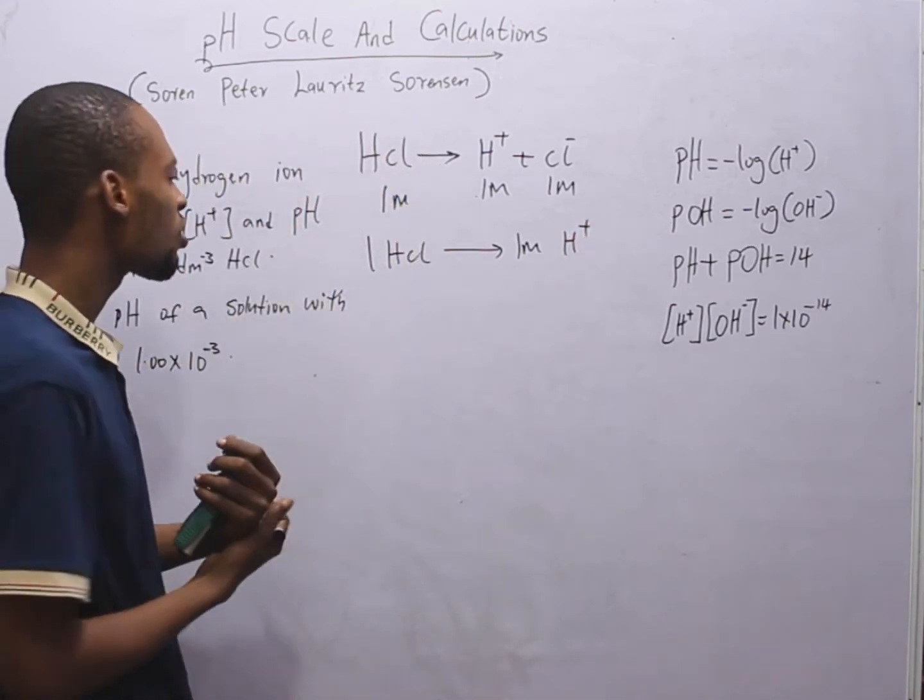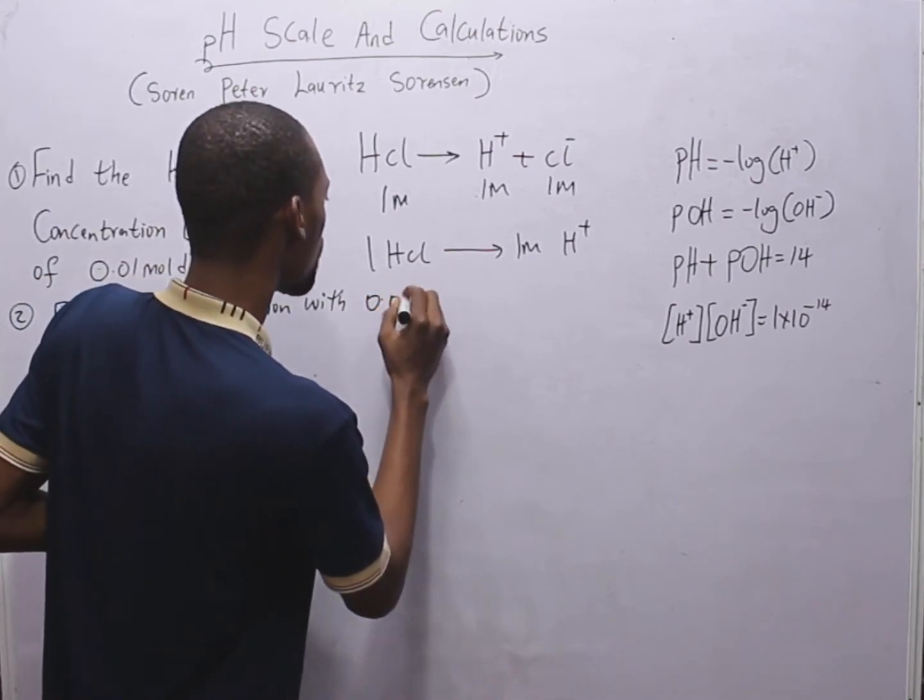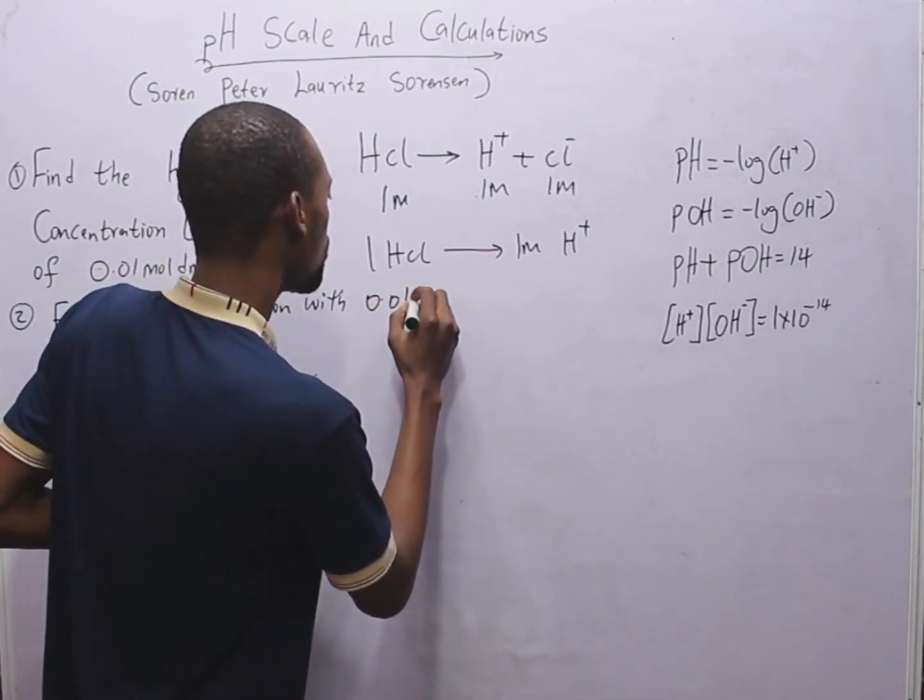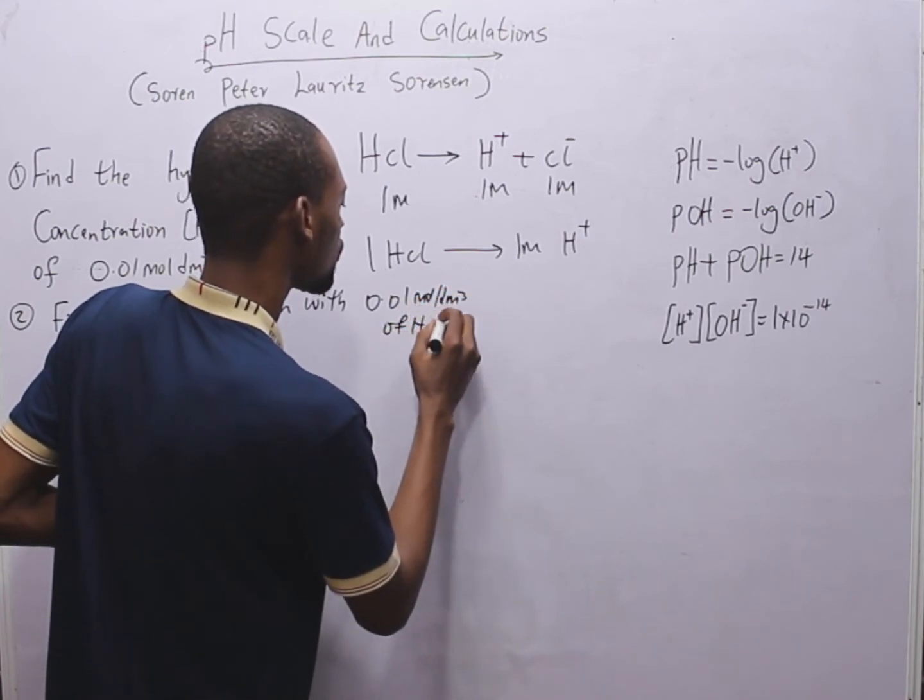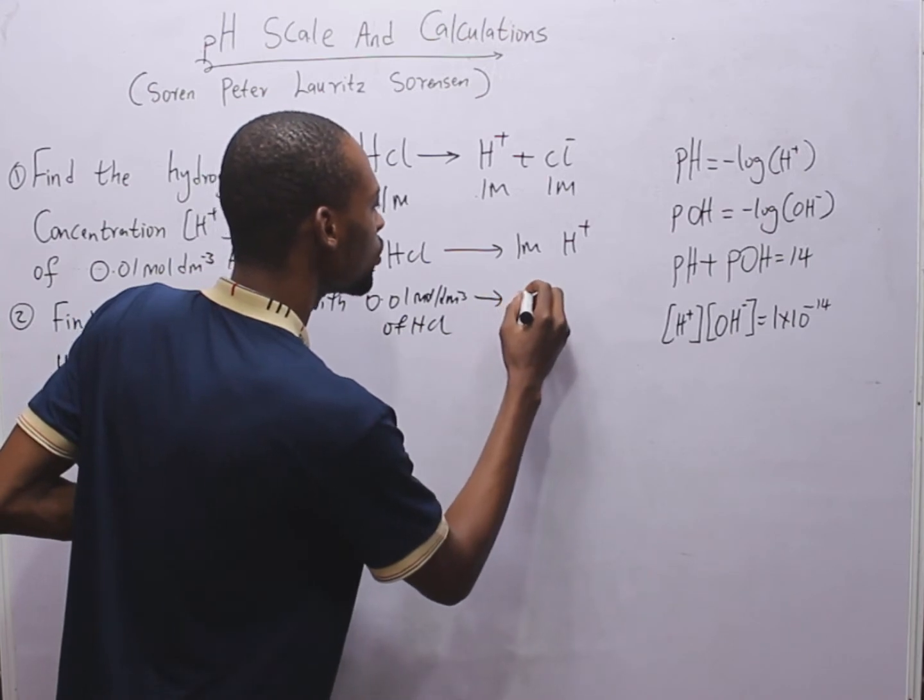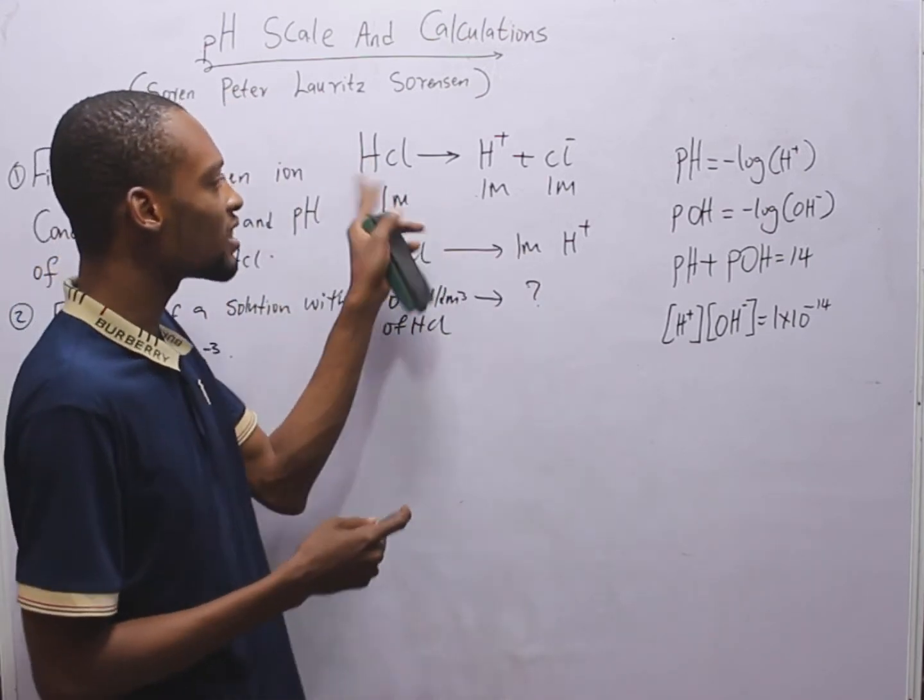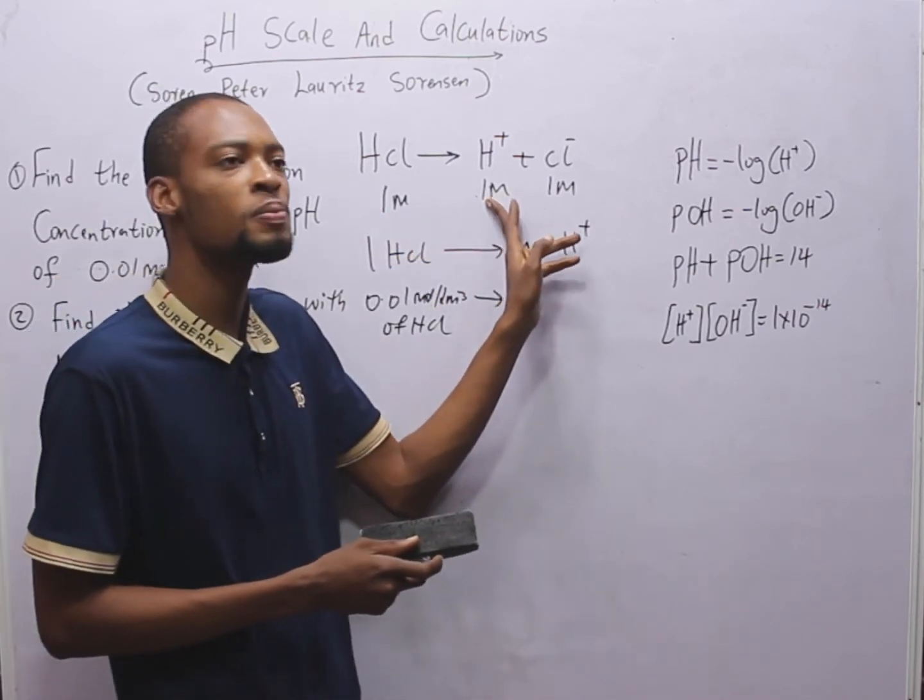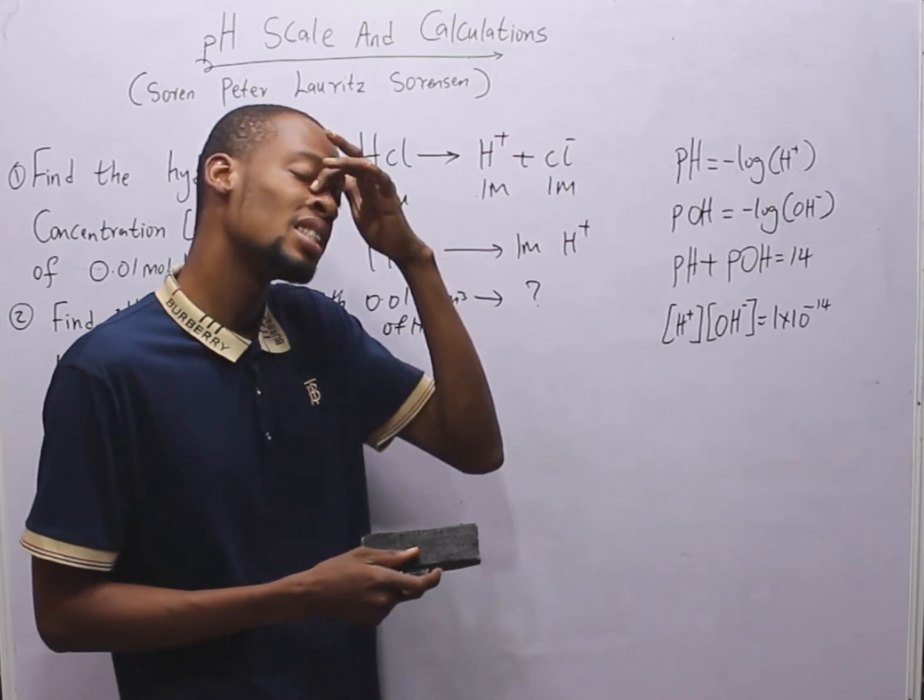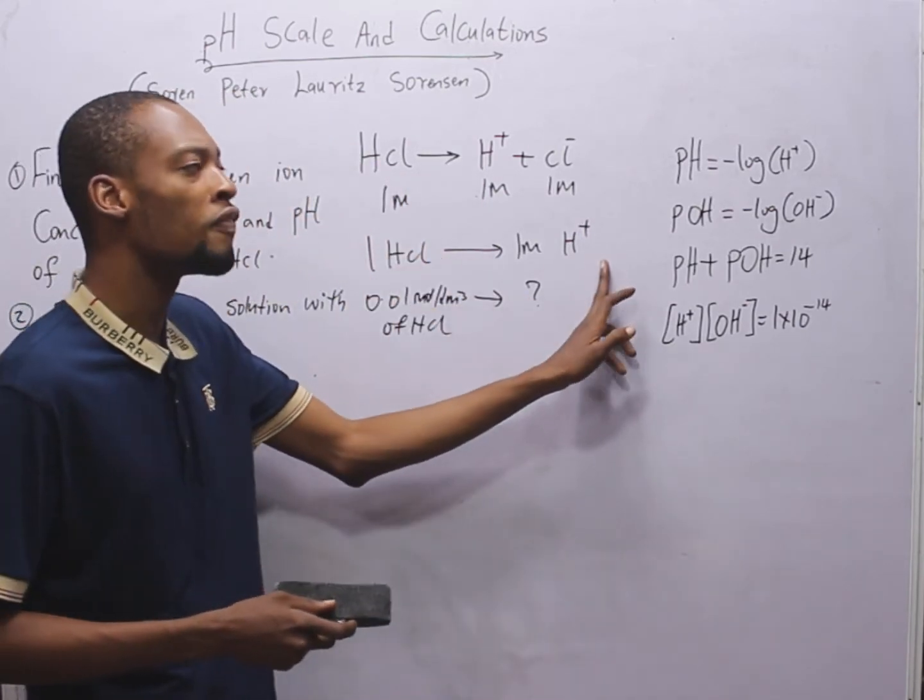It means that 1 mol of HCl will give us 1 mol of H plus. If that is correct, then 0.01 mol per dm cube of HCl will give us 1 mol of H plus. Question. From this balance equation, 1 mol of HCl gives us 1 mol of H plus and 1 mol of Cl minus.